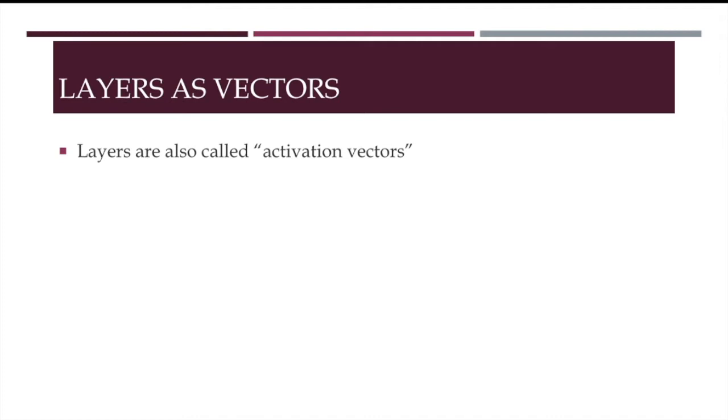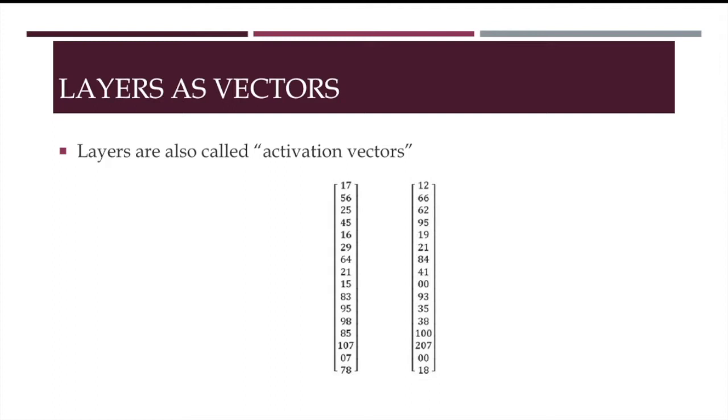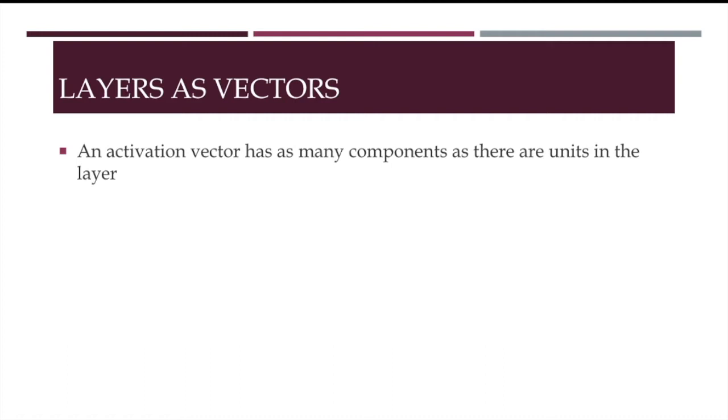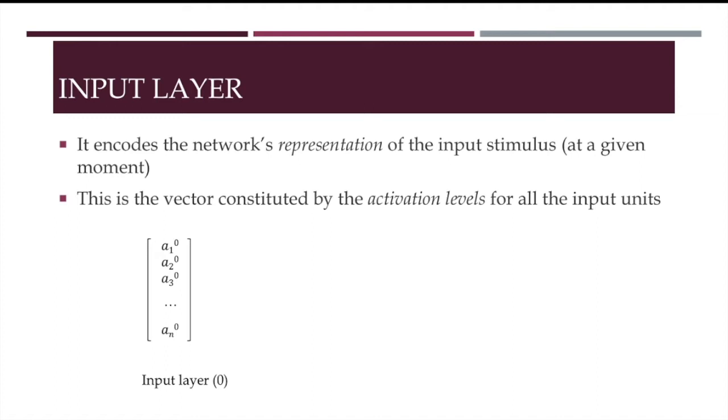Layers are also called activation vectors. By vector I simply mean a group of numbers which you can picture as being arranged in columns, as in these two examples. An activation vector has as many components as there are units in the layer.